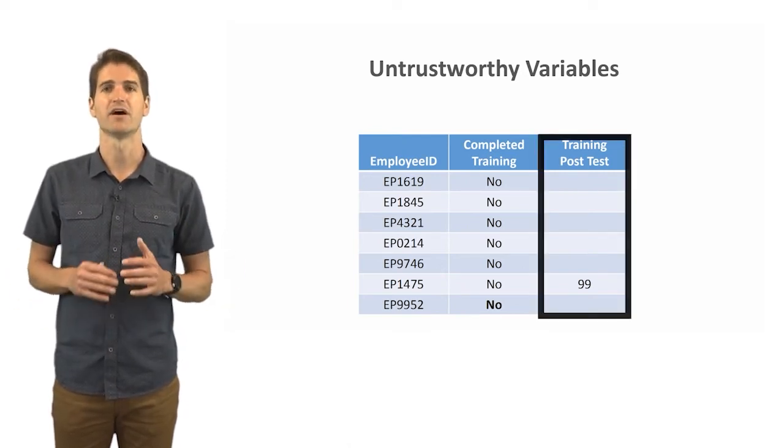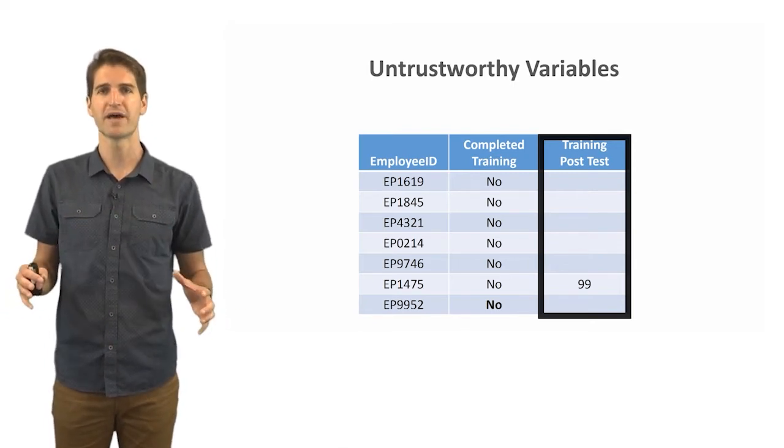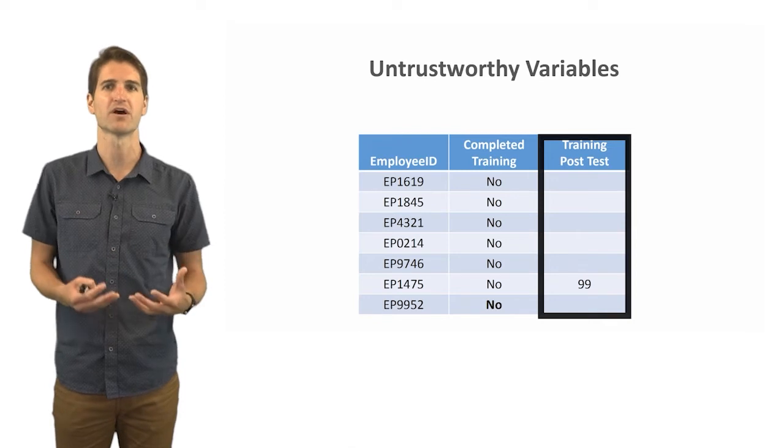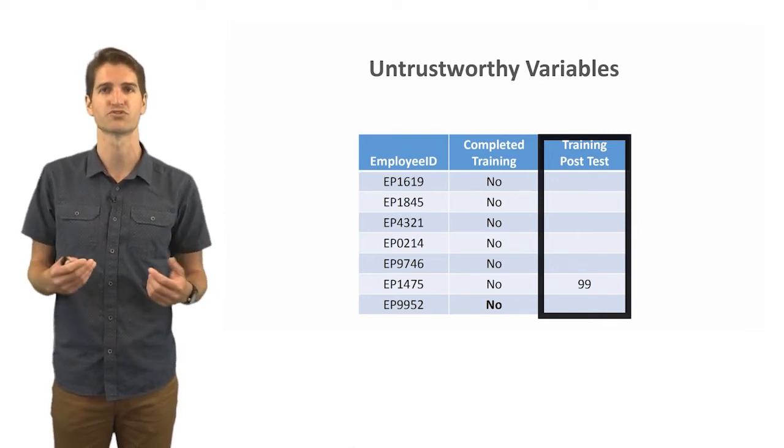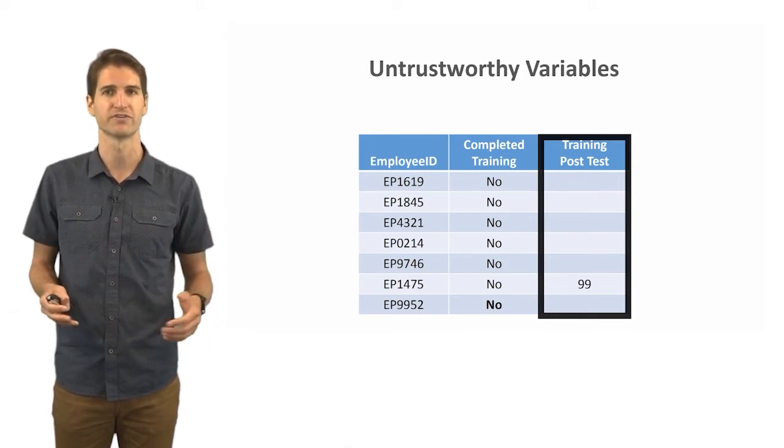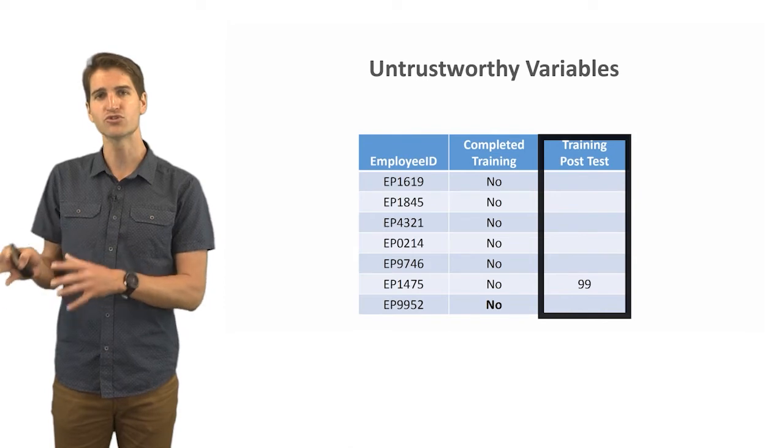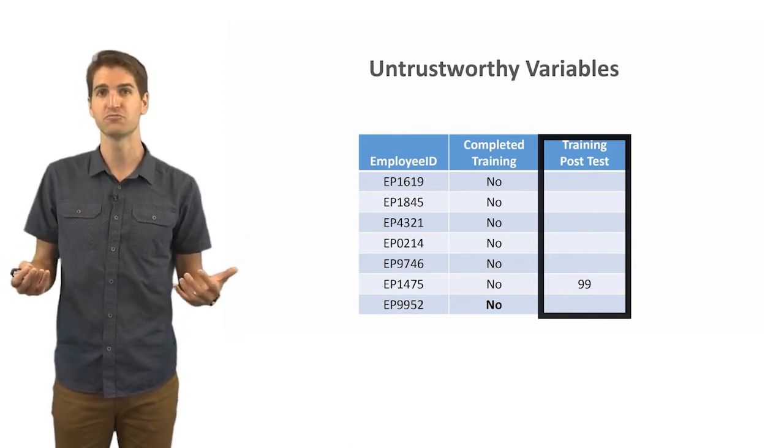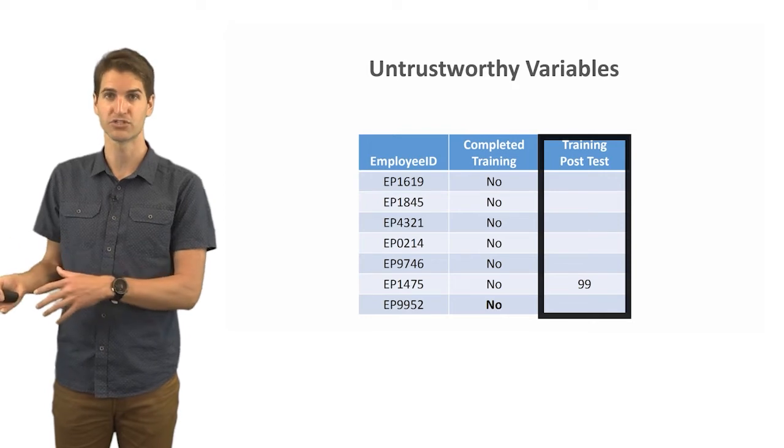Now let's take a look at the third column which is that training post-test. Here we have a big issue with missing data, and sometimes when data missingness is too problematic we might have to decide to forego using that untrustworthy variable. The variable becomes untrustworthy because we just don't have enough responses for it, enough values, enough scores for that particular variable. Here we see that only one employee has a score and that's a score of 99, but we don't have any other data for the other employees.